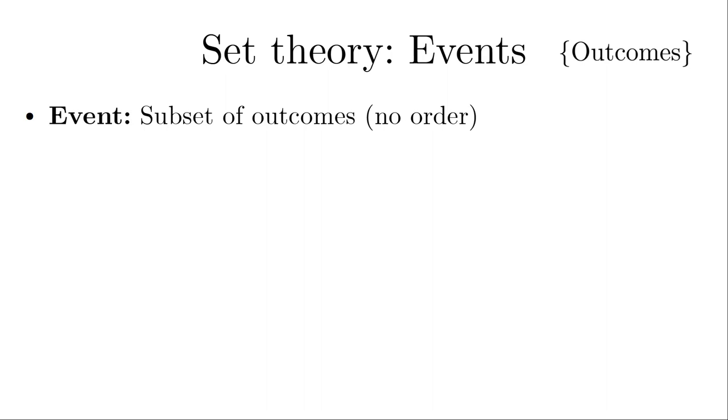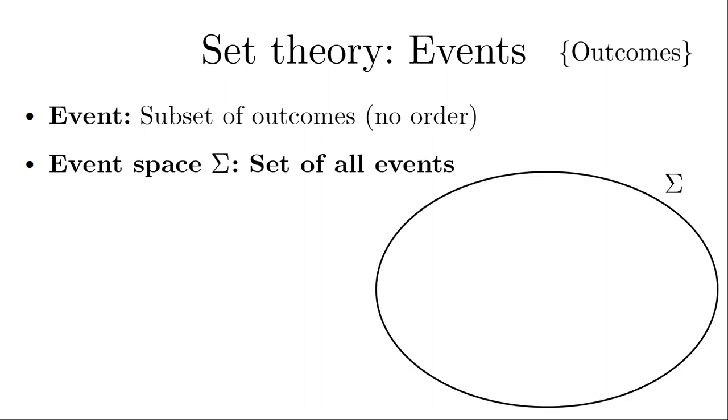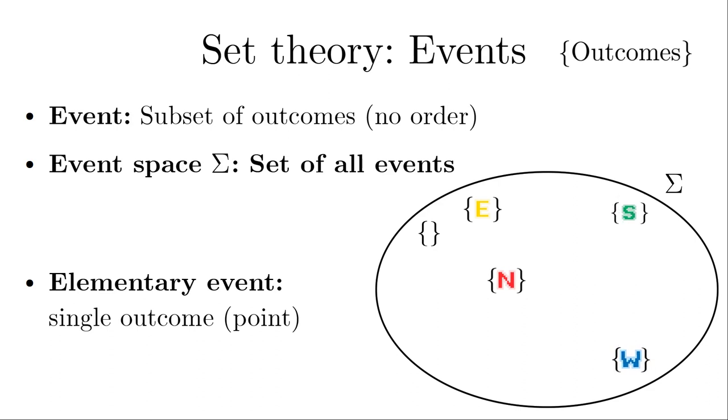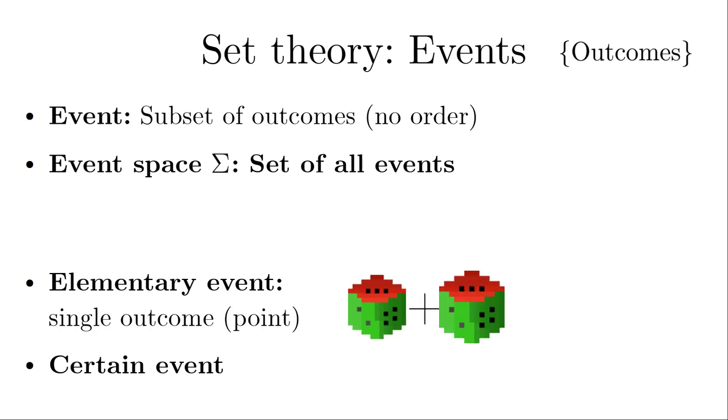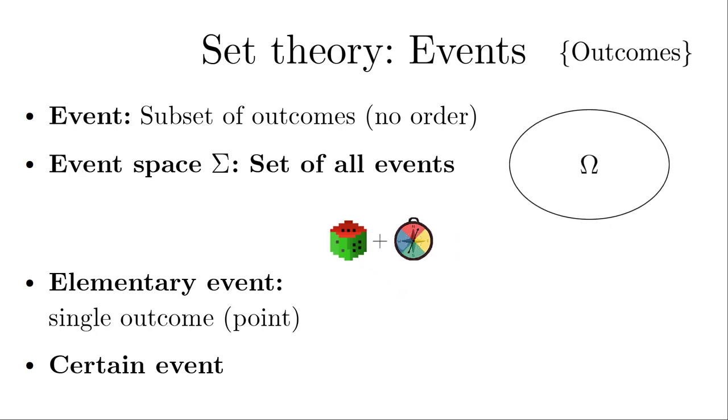Let us analyze how many events can be formed by the subsets of the sample space. To this end, we take a look at the event space denoted by sigma, which is the space of all possible subsets of the sample space omega. We call this also the power set of omega. The smallest event containing no outcome is called the empty set and is never realized. It is therefore also called the impossible outcome. Events containing only one outcome are called elementary events. The event that covers the entire sample space is the certain event or the one element. As for the complexity of the questions, there are no restrictions. We could also consider multiple dies or repeated throws of a single die. Or we could even combine a die experiment with the random compass.